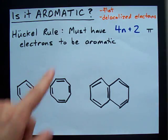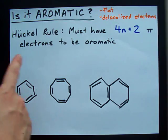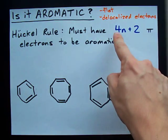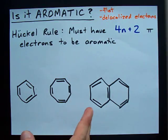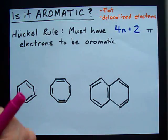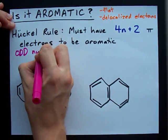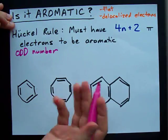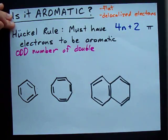Long story short, if you're asked if it's aromatic, you've got to follow the Hückel rule. The Hückel rule says you must have 4n + 2 pi electrons — you can count up the number of double bonds and multiply by 2, and if that fits this formula, then it works. But I'm going to teach you the trick: if you have an odd number of double bonds and they're in a ring, it's aromatic. Odd number of double bonds.